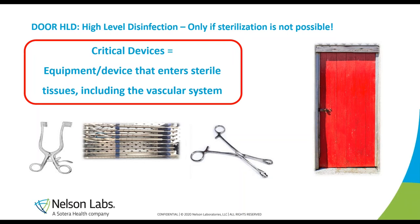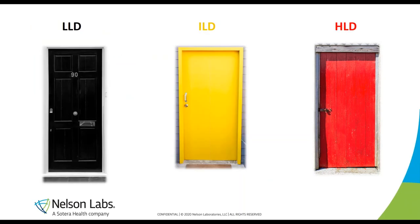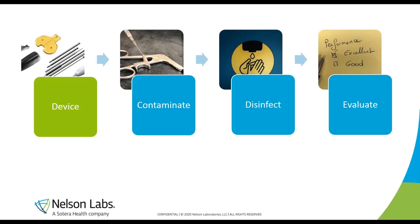Sometimes a material is not compatible with sterilization and you can only rely on high-level disinfection. Regardless of which door you enter — black, yellow, or red — the setup of your disinfection validation can be split into four parts, all the same for the three levels. This gives you a main validation framework you can use across all disinfection levels, making it easier for everybody.